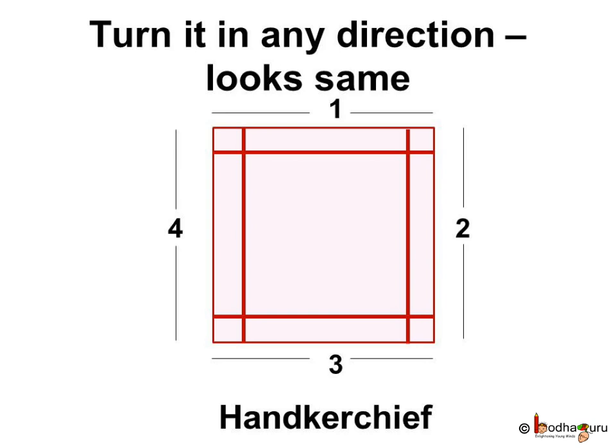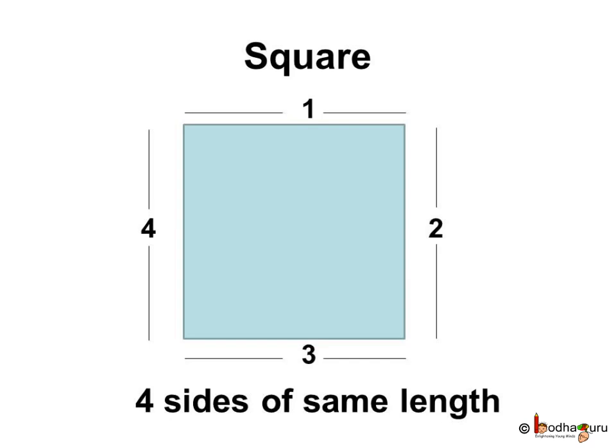It has one, two, three, four sides. All the four sides are of same size. We can say it is made of four equal lines. This shape is called a square. So, a square is a shape with four equal sides. Square has four straight sides that are of same length.